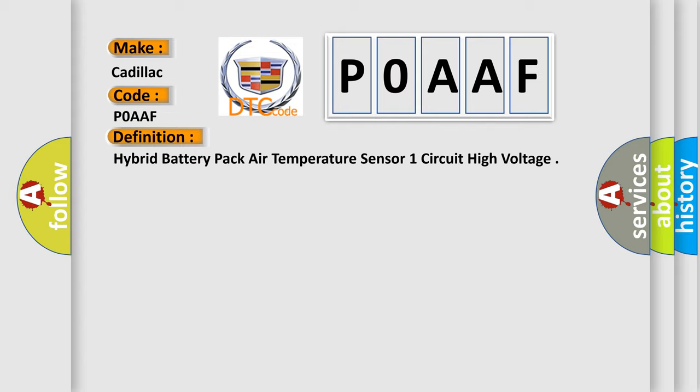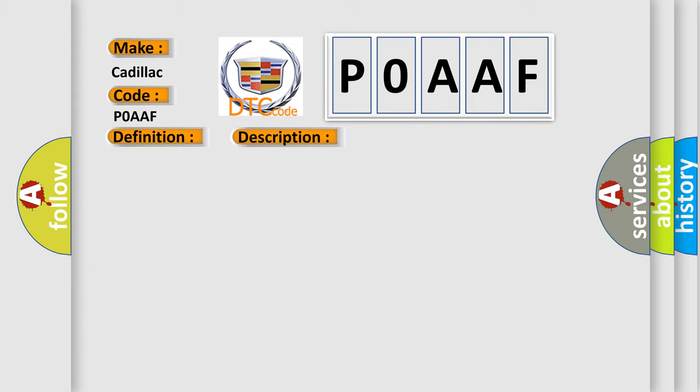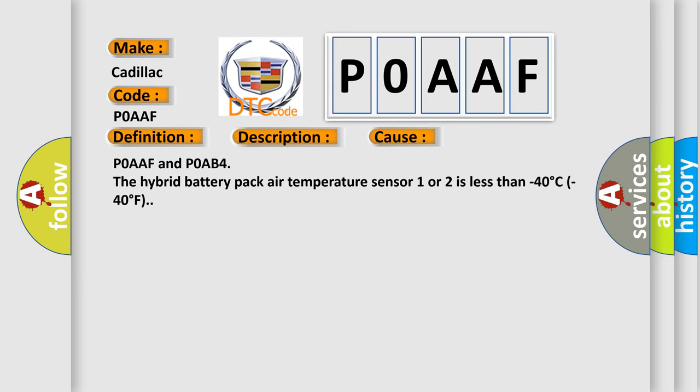Here is a short description of this DTC code. The ignition is on, and the 12-volt battery voltage is 9 to 18 volts. This diagnostic error occurs most often in these cases: P0AAF and P0AB4 — the hybrid battery pack air temperature sensor one or two is less than minus 40 degrees Celsius, or minus 40 degrees Fahrenheit.